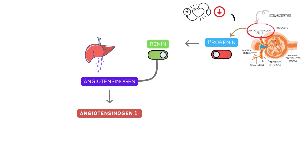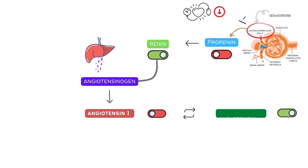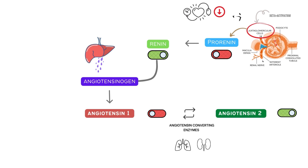But angiotensin 1 is physiologically inactive. Hence, to convert angiotensin 1 into angiotensin 2, angiotensin-converting enzymes come into play. This ACE, or angiotensin-converting enzyme, is found primarily in the vascular endothelium of the lungs and kidneys.